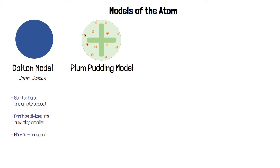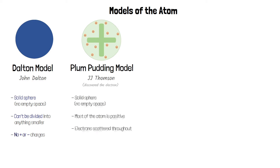The second model was the plum pudding model. This was developed by JJ Thompson who discovered the electron. Like the Dalton model this model was a solid sphere with no empty space. But unlike the Dalton model this atom had positive charges — most of the atom is positive — and it also had negative charges because it had electrons scattered throughout.